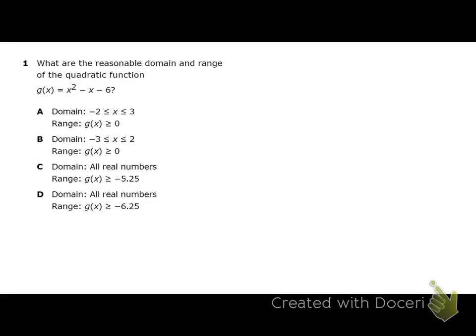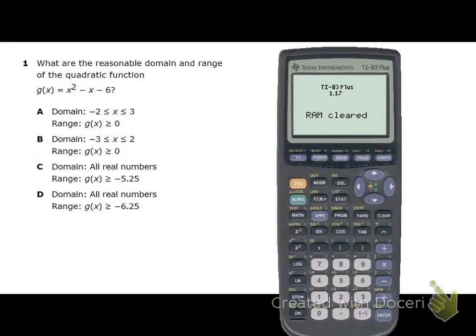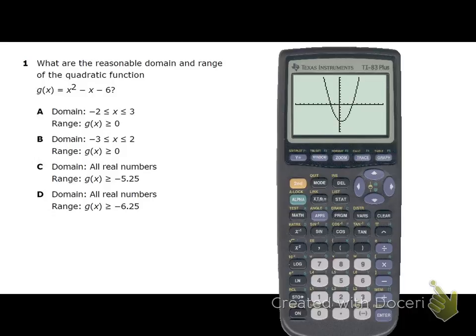What are the reasonable domain and range for this quadratic function? It's describing a quadratic and gives us an equation. For a problem like this, what always helps me is to get a good look at the graph of that function. So I'm going to go over to my graphing calculator and graph this. I'll go to Y equals and graph X squared minus X minus 6. If I graph that, there's my parabola.